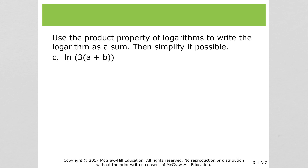For the natural log of 3 times (a plus b), since we've got multiplication, we'll have the natural log of 3 plus the natural log of (a plus b). Notice the a plus b — you can't do anything with that. There's no property that allows us to separate the log of two things added, so that has to stay.